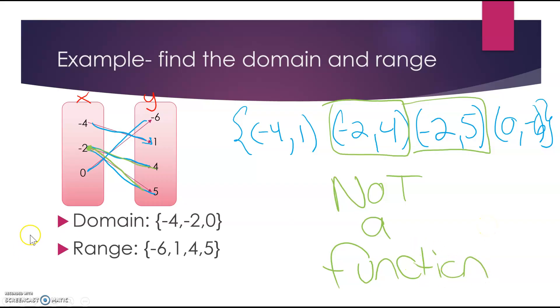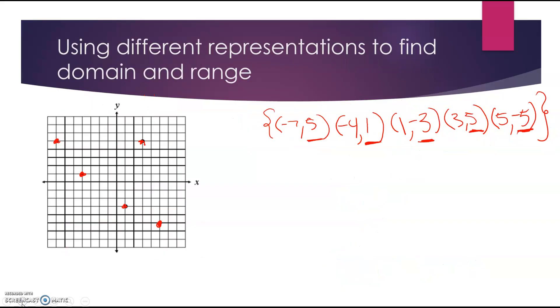Last one. I could look at my ordered pairs and see that I have all different x values. I could also use my vertical line test. Notice if I draw a vertical line, I only ever hit one of the points at a time. So this is a function.